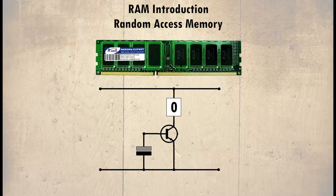The problem is that the capacitor loses its charge very quickly. So if a memory cell is switched to 1 and the capacitor discharges, the transistor will default to 0 — hence the reason why data in memory is lost when the power is removed. To prevent this, the memory needs to be topped up, or refreshed.